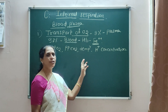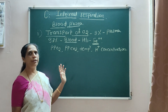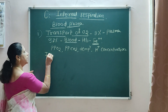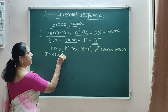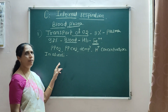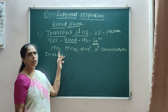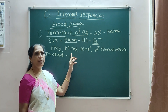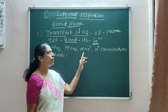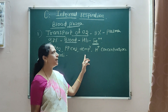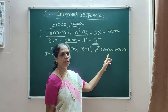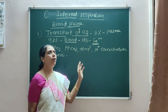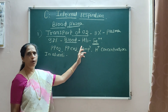If the condition is favorable, oxyhemoglobin formation takes place in the alveoli. The alveoli contain high partial pressure of O2, low partial pressure of CO2, low temperature, and less H+ concentration. All these factors are suitable or favorable for formation of oxyhemoglobin.